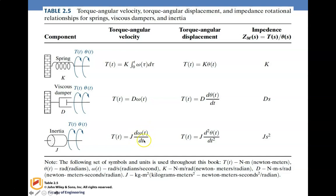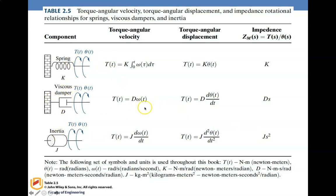d-omega/dt is the same as d²theta/dt². Taking the Laplace transform gives J·s²·theta, so J·s² becomes the impedance. These are the impedances for the three elements: the torsional spring (K/s), viscous damper (D·s), and inertia (J·s²).